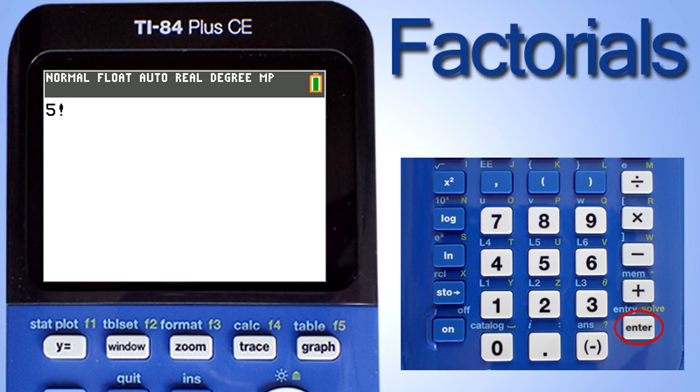Now the screen is showing 5 factorial. To calculate 5 factorial, just press the enter key here. And the answer is to the right, 120.